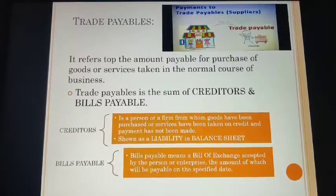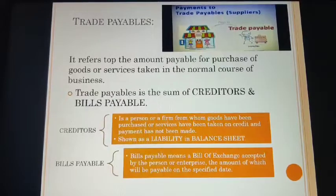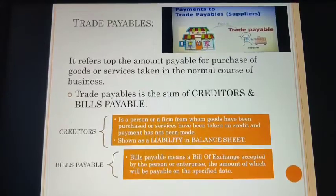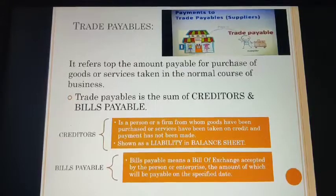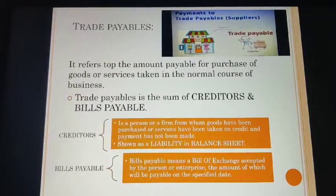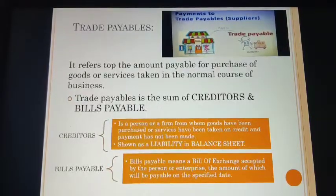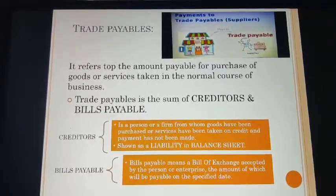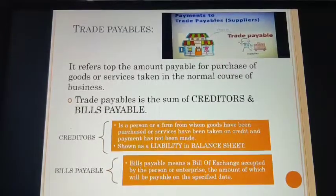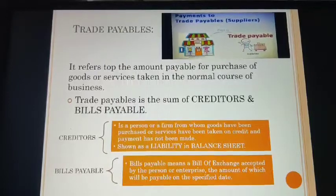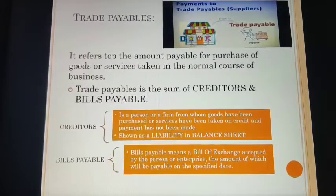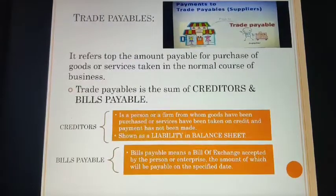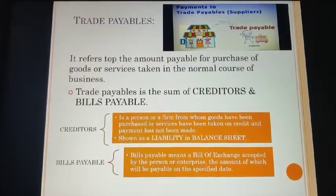A creditor is a person or a firm from whom goods have been purchased or services have been taken on credit and payment has not been made. It is shown as a liability in the balance sheet because you have to pay this amount in future. Bills payable means a bill of exchange accepted by the person or enterprise, the amount of which will be payable on a specified date.